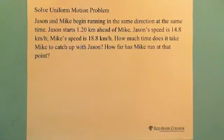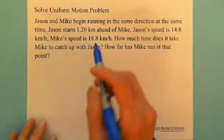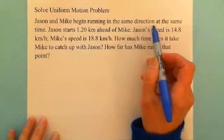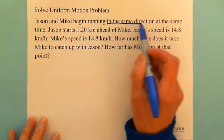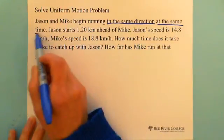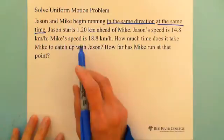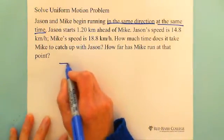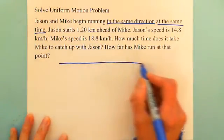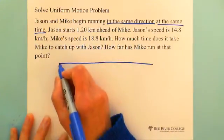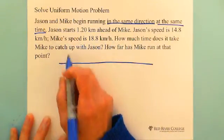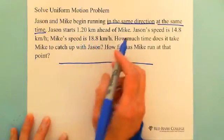Jason and Mike begin running in the same direction at the same time. Let's read the question and draw a picture. They begin running in the same direction at the same time, but Jason starts 1.20 km ahead of Mike.